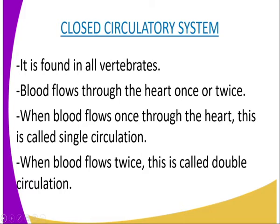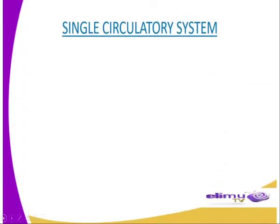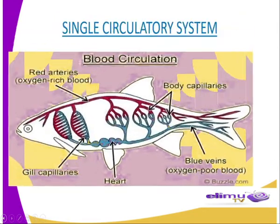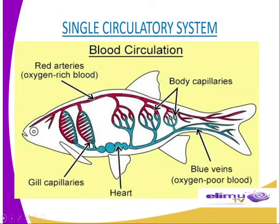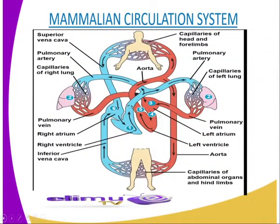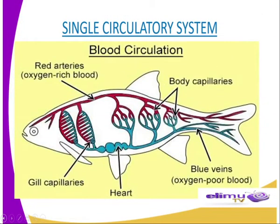We have said that the blood flows through the heart either twice or once. We have got a single circulatory system, that is whereby the blood is flowing through the heart once, and we have got double circulation whereby the blood is flowing through the heart twice. Single circulation is one where blood flows only once through the heart for every complete circulation.